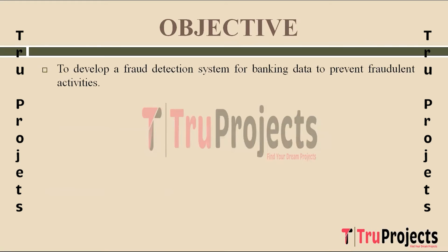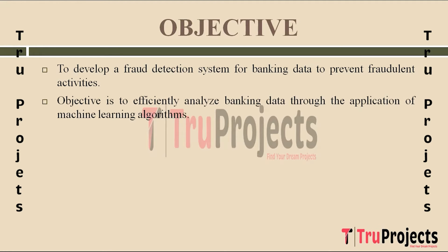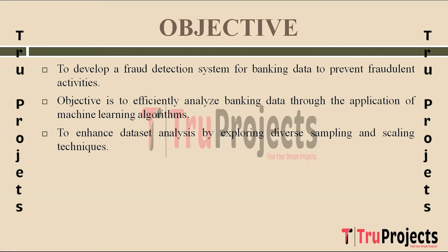The primary objective of this project is to create an advanced fraud detection system tailored for banking data, designed to identify and prevent fraudulent activities effectively. The project employs machine learning algorithms to efficiently analyze large volumes of banking data, identifying complex patterns and anomalies indicative of fraud. It also aims to improve dataset analysis by exploring diverse sampling and scaling techniques, which enhance the robustness and accuracy of fraud detection models.